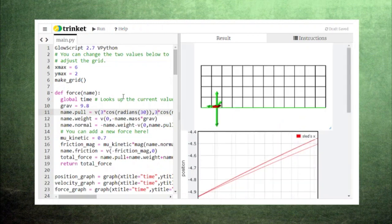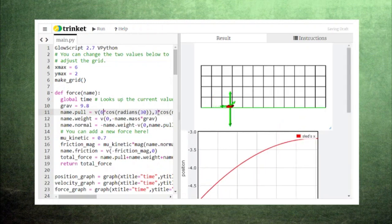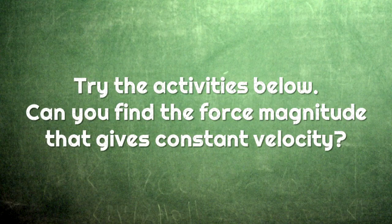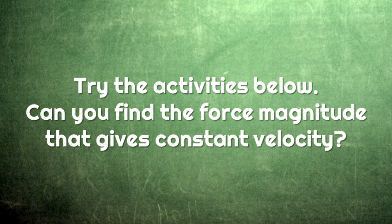This means that there's some special value of force magnitude that will result in constant velocity motion. Click the link in the description below to find a set of activities that will help you adjust the force magnitude until you find this special value.